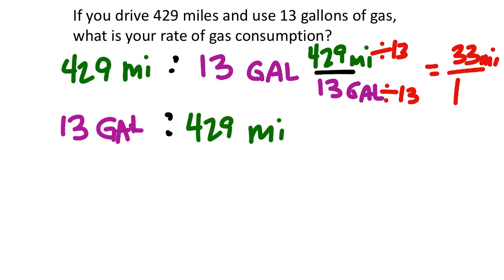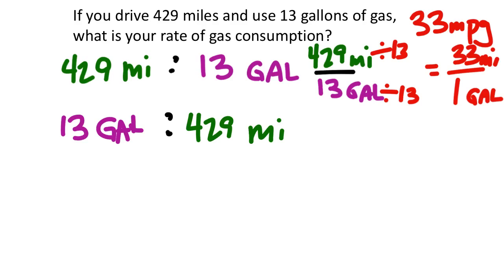Since miles and gallons are different labels, they don't cancel. So we get 33 miles to one gallon. Some of you might write that as mpg — miles per gallon — which is appropriate. Hopefully you've seen or used this rate before: 33 miles per gallon is pretty good.